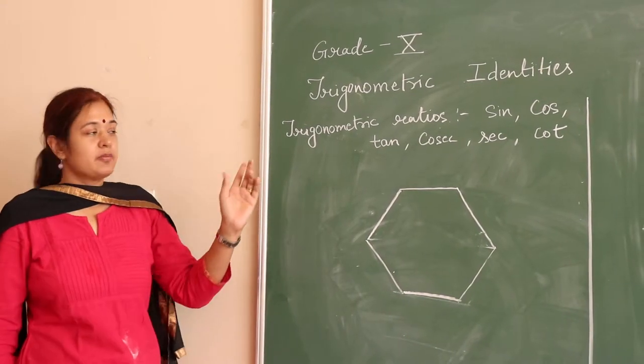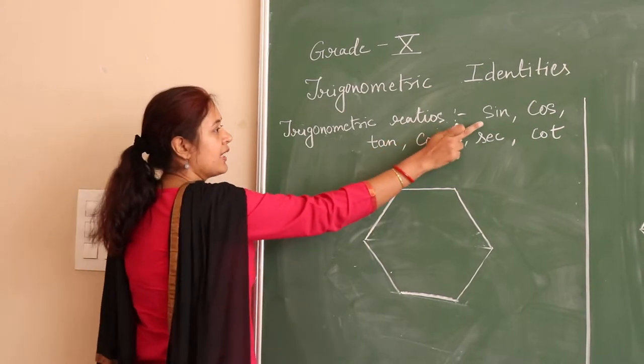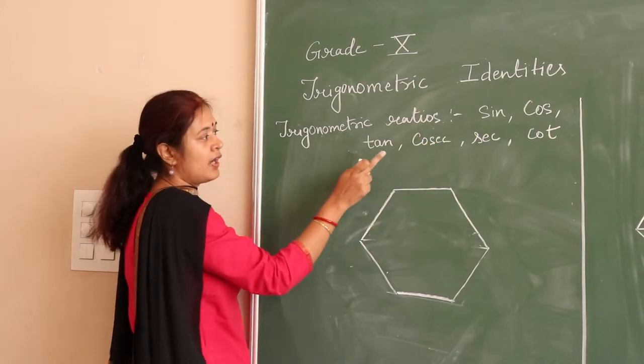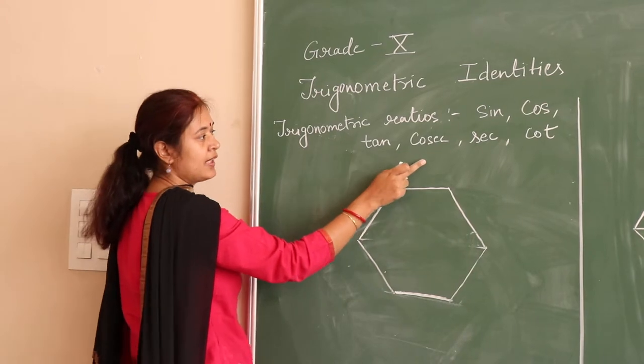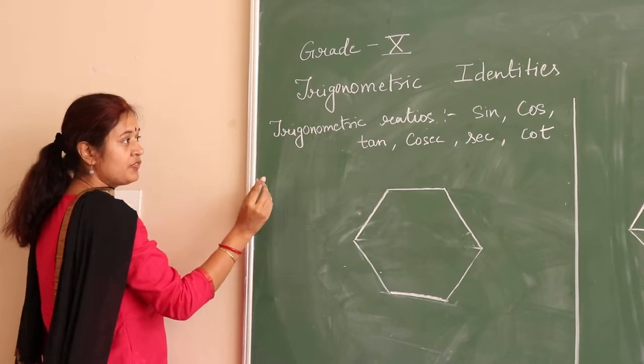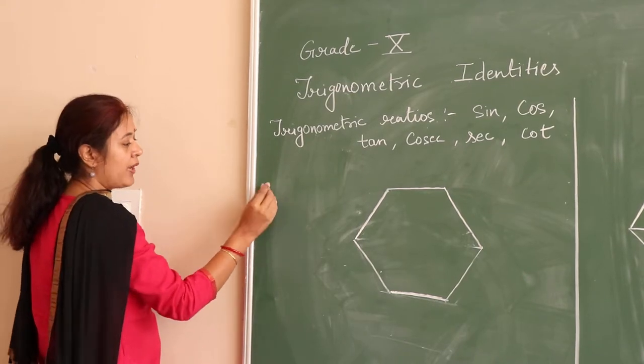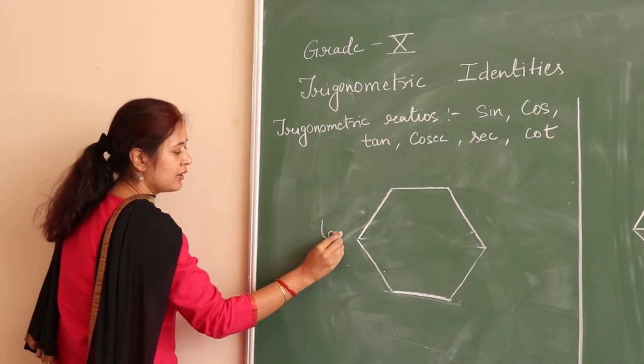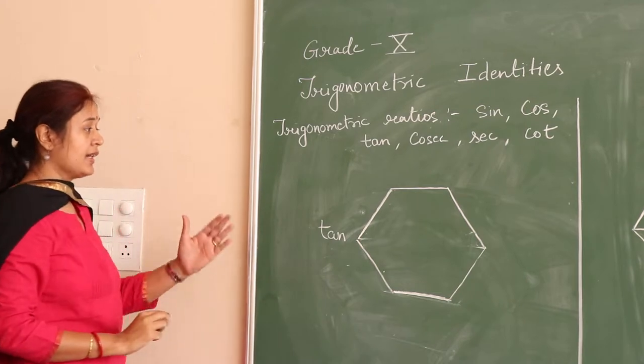So as we know we have six trigonometric ratios: sin, cos, tan, cosec, sec, and cot. First of all we have to write tan here on a regular hexagon.